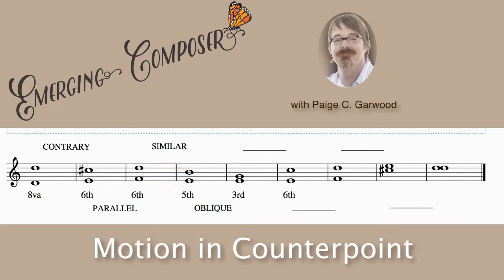The last type of movement is called oblique. Oblique motion is where one note stays the same and the other voice moves up or down. In this case, we started at a fifth — E and B — and we go to a third. The bottom note stays the same, but the top voice moved from a B down to a G. That's called oblique.